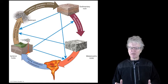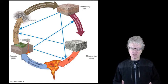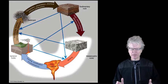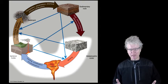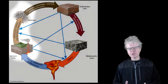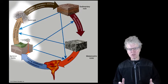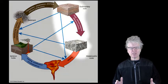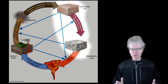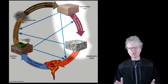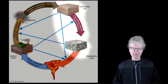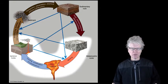Looking at this diagram, igneous rocks form from magma and lava. Through the processes we're going to look at now - weathering and erosion - they can form into sedimentary rocks. Sedimentary rocks, through the processes of heating and pressure, can form into metamorphic rocks. If you continue to heat those metamorphic rocks, you can turn them back into igneous rocks. That's why we call it a rock cycle.